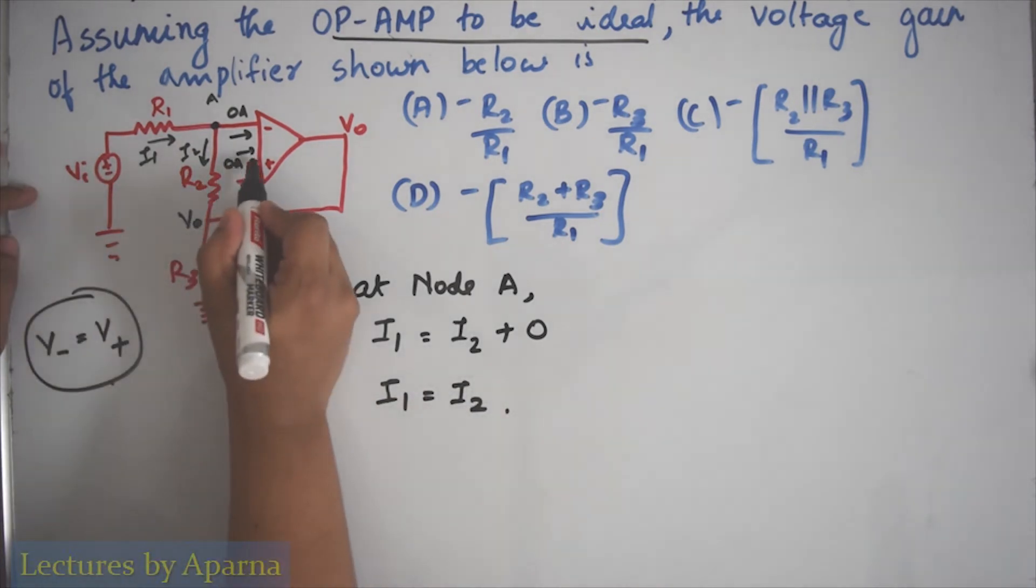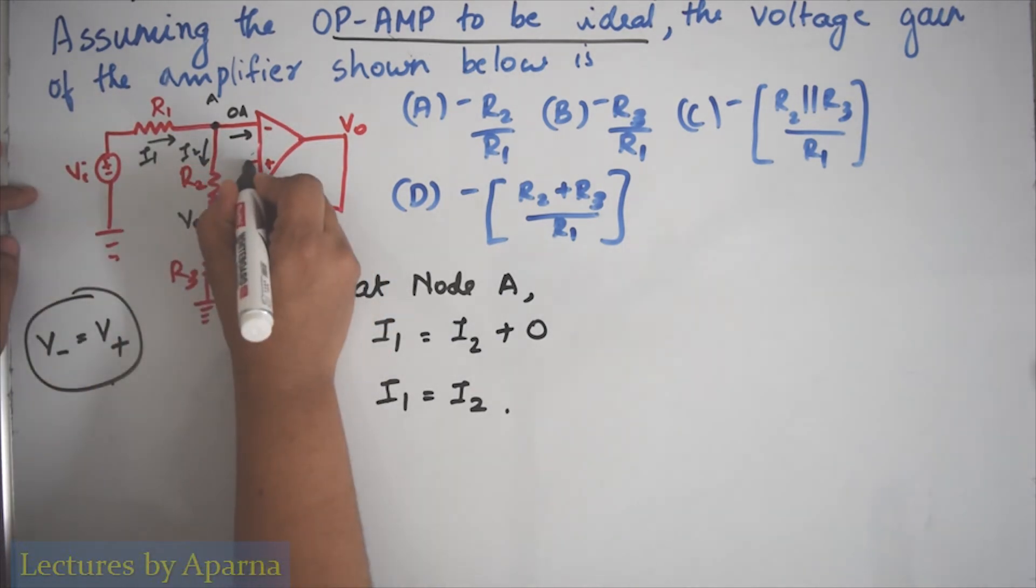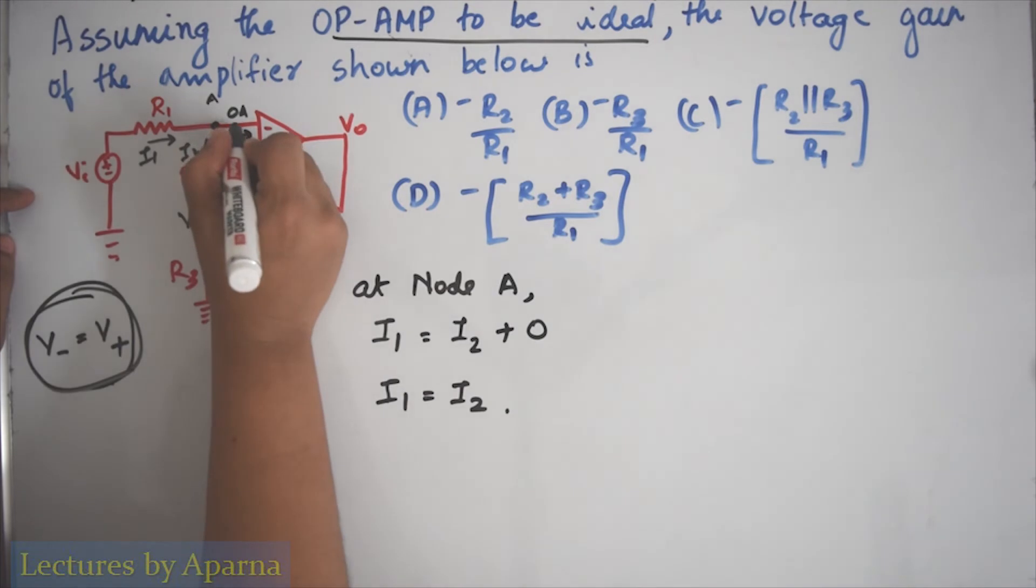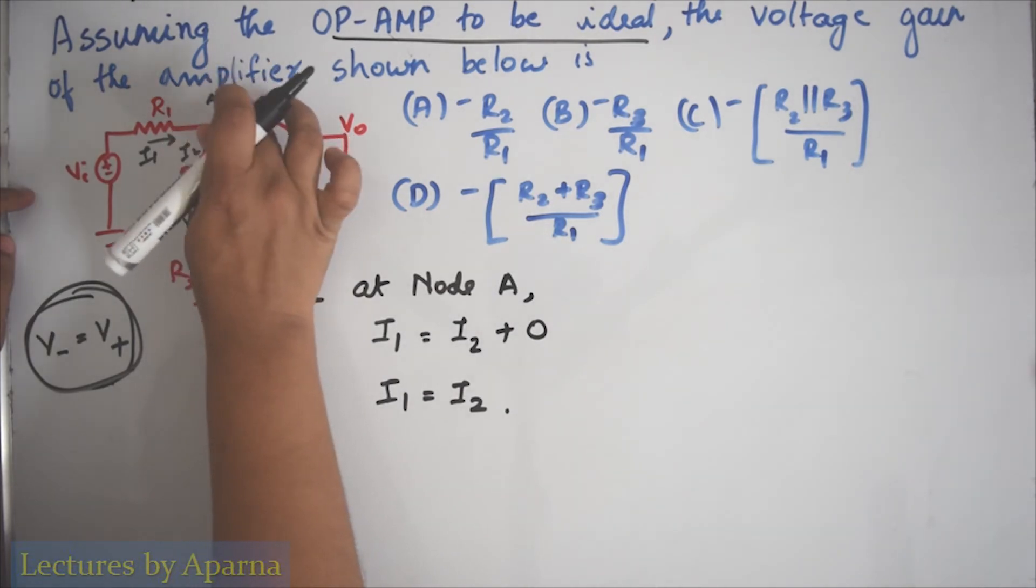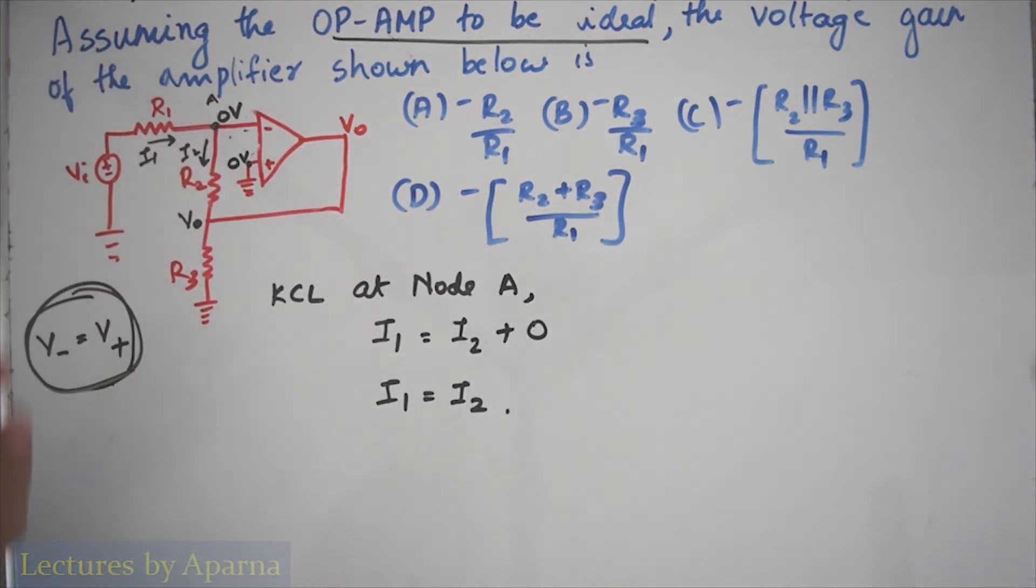Now the voltage at this non-inverting terminal is 0 volt. Using this condition, the same voltage will be present at this node, 0 volt. The voltage at this point will also be 0 volt.